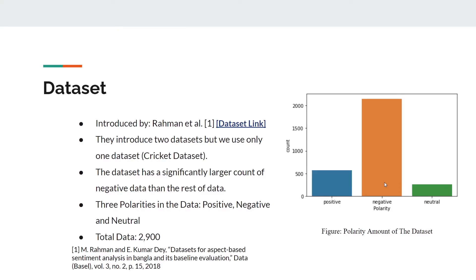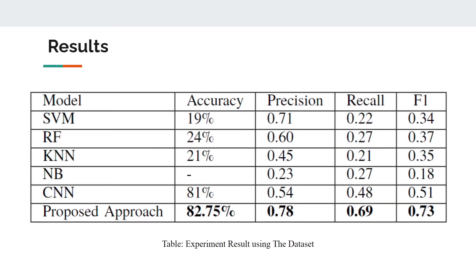Talking about the dataset, it was first introduced by Raman et al. — the link and citation are provided. They introduced two datasets: a cricket dataset and a restaurant dataset. We are using the cricket dataset. This dataset has a significantly larger count of negative data — around 2,000 or more — compared to the other classes. There are three polarities: positive, negative, and neutral, and the total count of this dataset is 2,900.